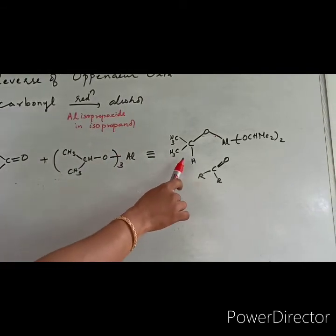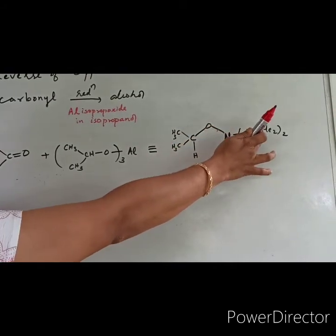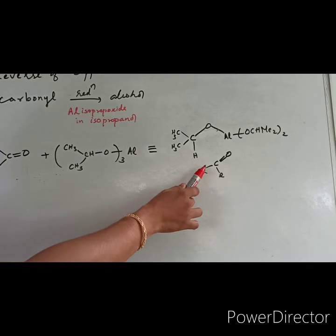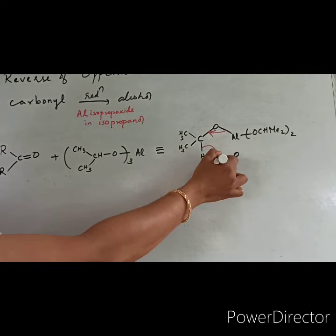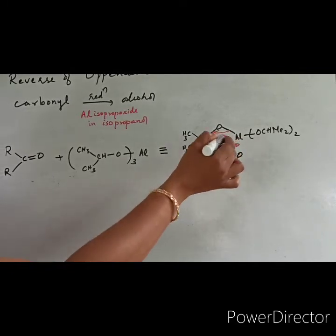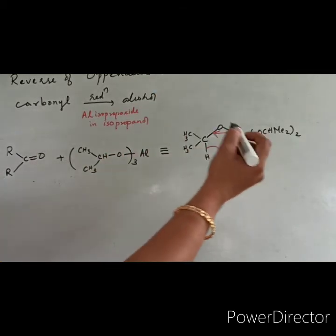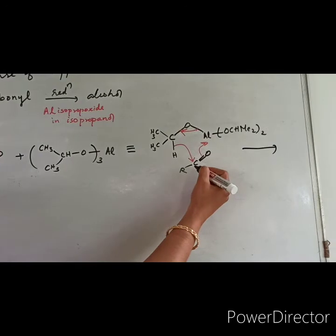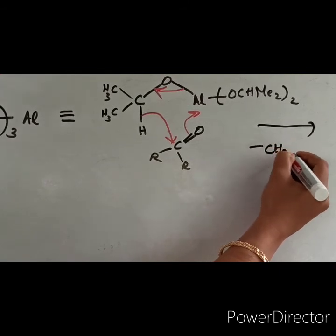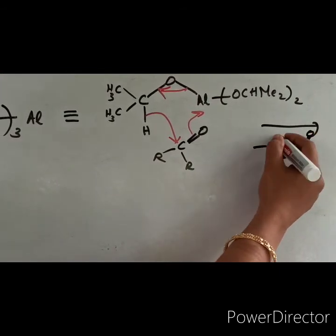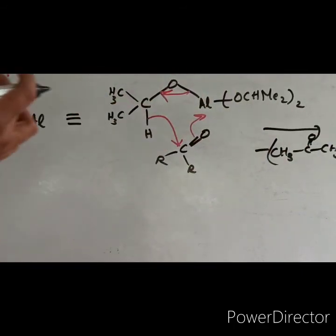In order to show the mechanism, we are writing in this manner. One isopropoxide group. This is our carbonyl compound. This hydride will be shifted to here. This will be shifted here. CH3-C-CH3. A ketone molecule will be eliminated. Remaining portion what you will be getting.